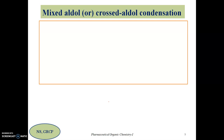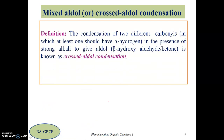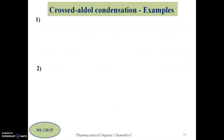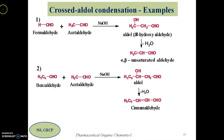We have seen simple aldol condensation between two similar aldehydes and two similar ketones. Now let us move to mixed aldol or crossed aldol condensation. This occurs when two different types of aldehydes or ketones are used. The experimental conditions are similar, but out of the two compounds, at least one carbonyl compound must have alpha hydrogen. Alkali is still required, and the product is again aldol, which undergoes dehydration to give alpha beta unsaturated aldehydes or ketones.